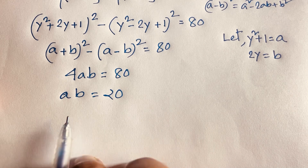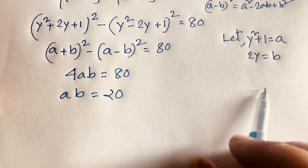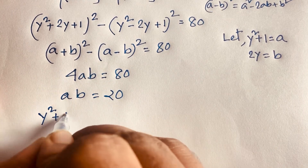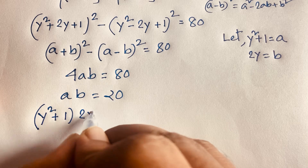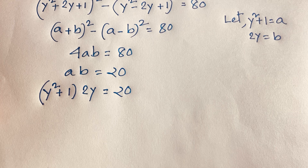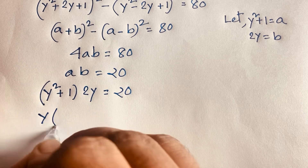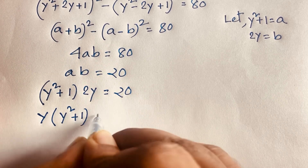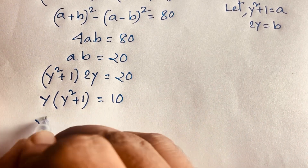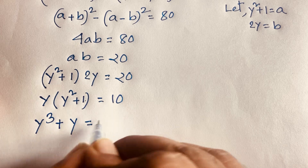Recalling that a = y² + 1 and b = 2y, substituting back gives 4 × (y² + 1) × 2y = 80. Dividing both sides by 2 gives y(y² + 1) = 10. Expanding, this becomes y³ + y = 10.